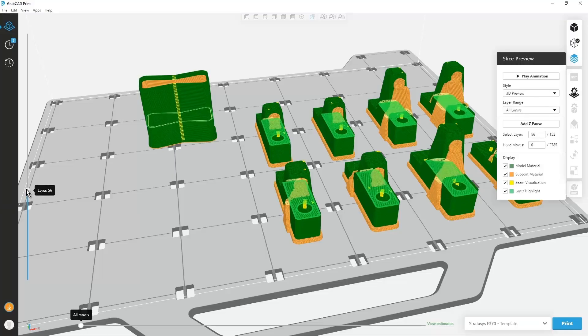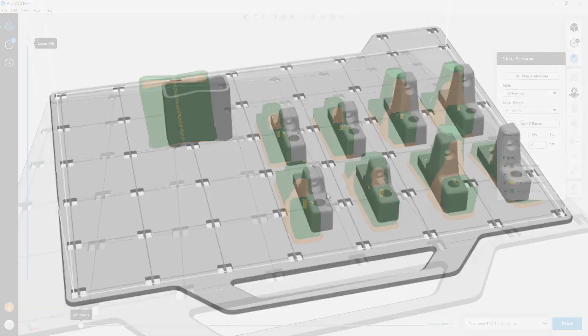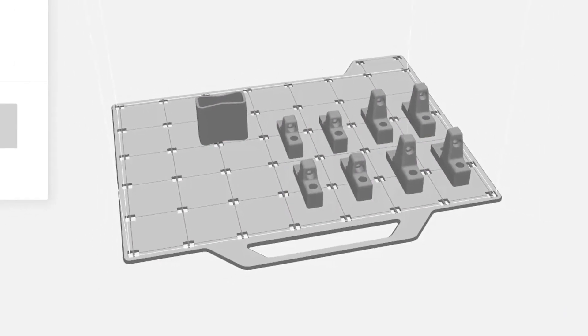Using our GrabCAD print software, your 3D CAD is easily sliced layer by layer, telling the printer exactly how to make the part that you're asking it to produce.